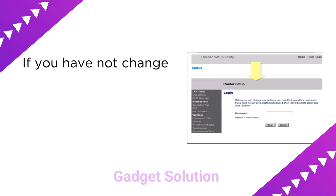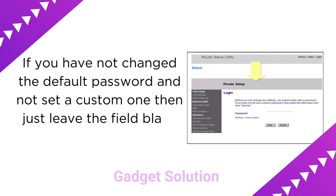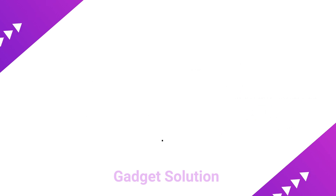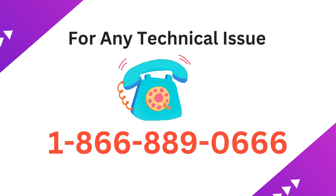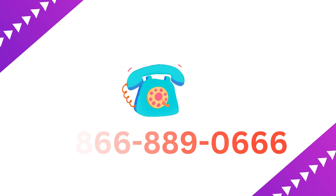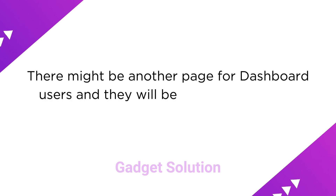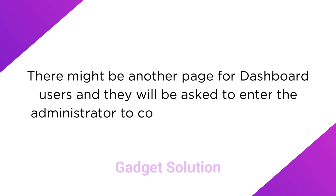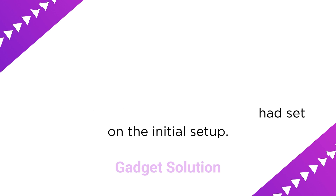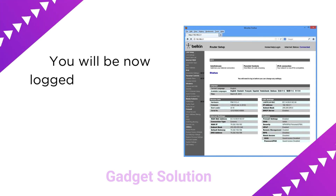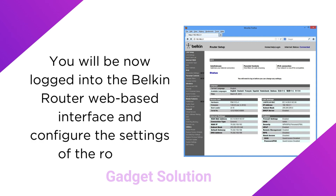You will be taken to the login page and asked to log in using the router's admin password. If you have not changed the default password and not set a custom one, then just leave the field blank and click on Submit. There might be another page for dashboard users who will be asked to enter the administrator password they had set on the initial setup. You will now be logged in to the Belkin router web-based interface and can configure the settings of the router.